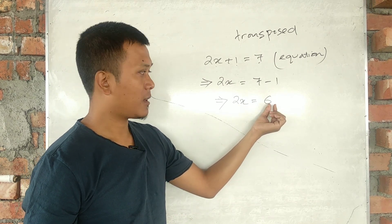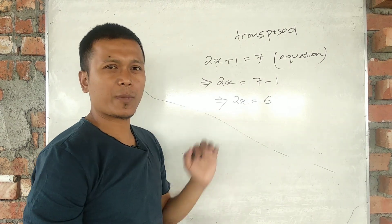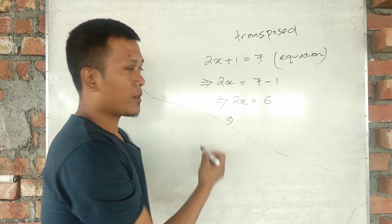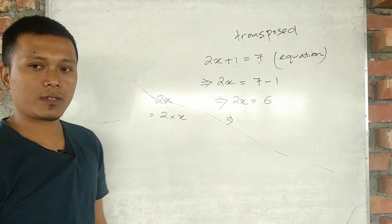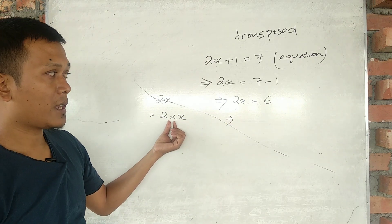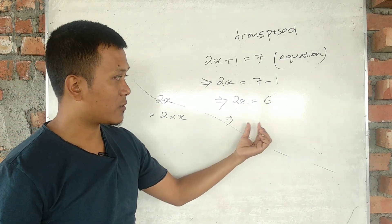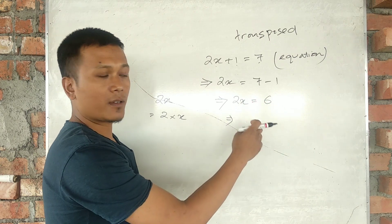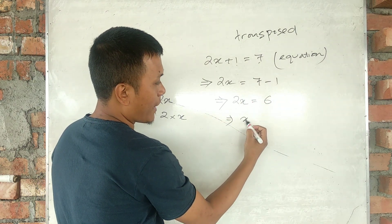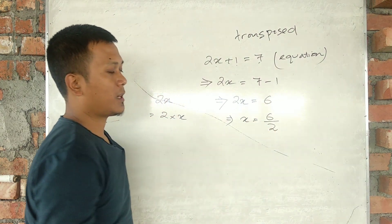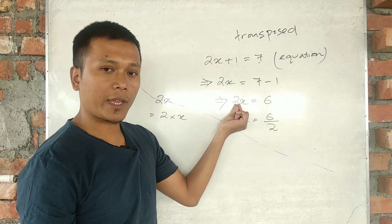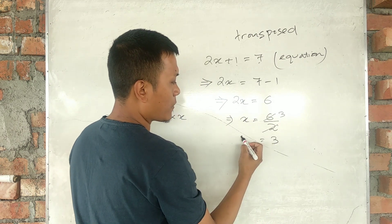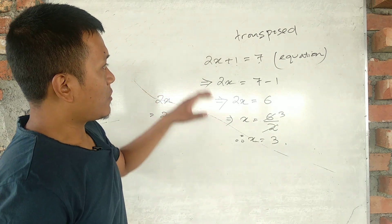Now the x value — we have 2x equal to 6. Here 2 is multiplied with x on the left-hand side. To isolate x, we transpose the 2 by applying its reverse operation, which is division. So x equals 6 divided by 2, which gives x equals 3.